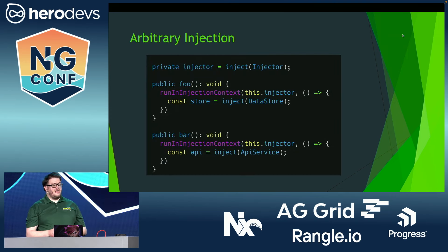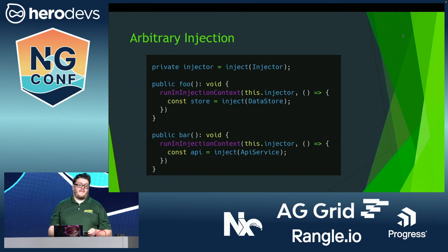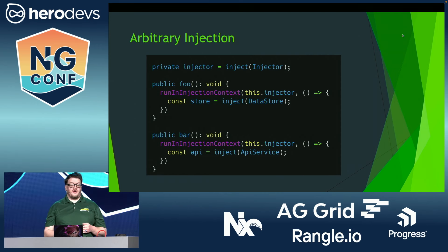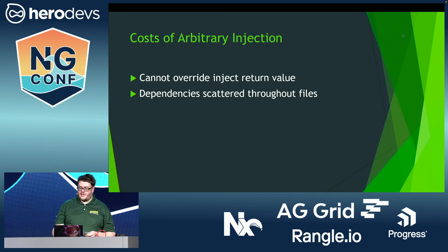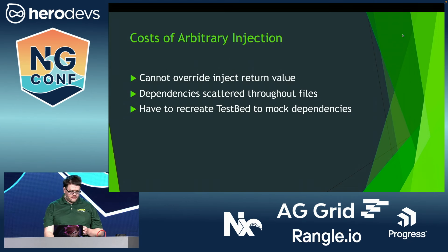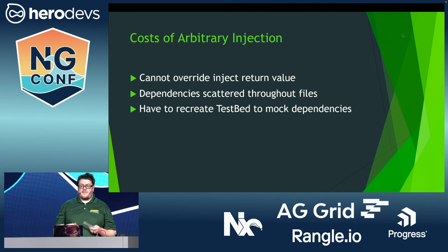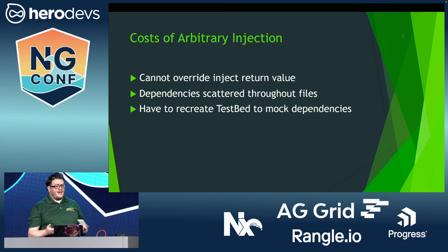Also possible is something like this. I don't actually have a name for this one, so I'm going with arbitrary injection. Now instead of having fields to reassign, dependencies are stuffed into local function variables that are impossible to override in tests. Not only that, but they're scattered around the file, so it's impossible to easily tell everything that a class depends on at a glance. The only way to achieve test isolation with this pattern is to build an inject mock that emulates the real function, which is both complicated and kind of defeats the point of avoiding Testbed in the first place.